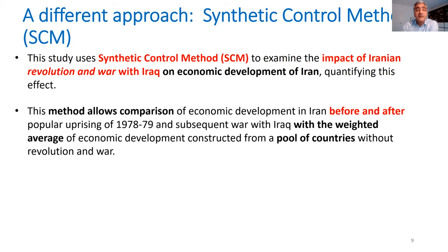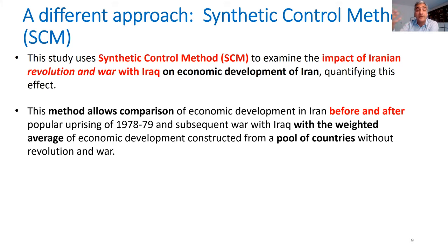The logic is that we need a synthetic counterfactual Iran that is quite similar to Iran before the shock of revolution in terms of economic development and predictors of income. The socioeconomic characteristics of this synthetic Iran should be as close as possible to real Iran. If we manage to find that copy of Iran — which is the major advantage of this method — the estimation becomes possible. We also show the extent to which our estimation is sensitive to the inclusion or exclusion of countries from the pool used to produce counterfactual Iran.